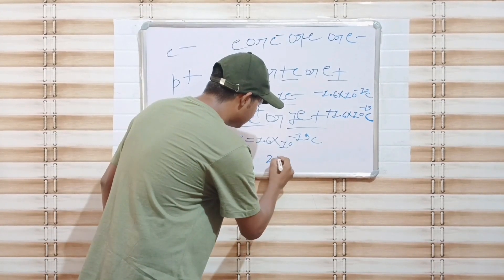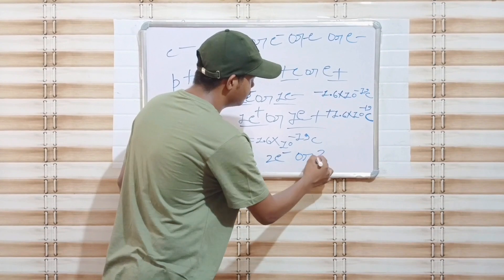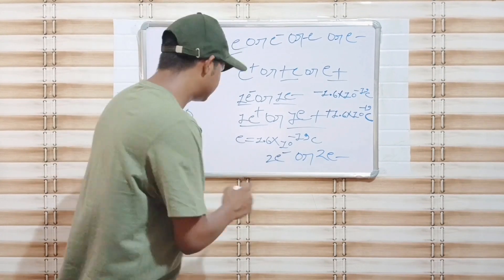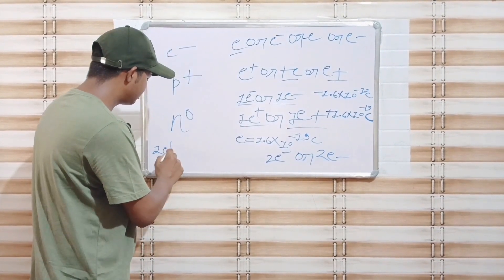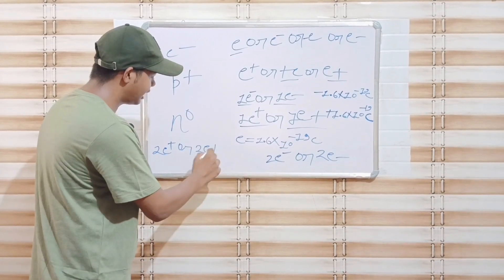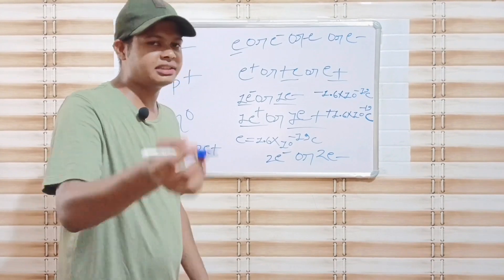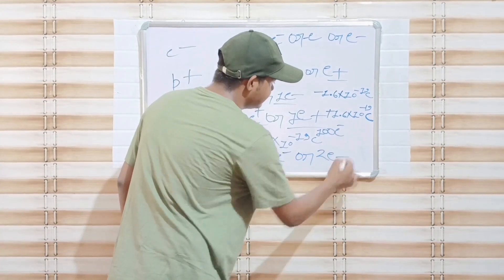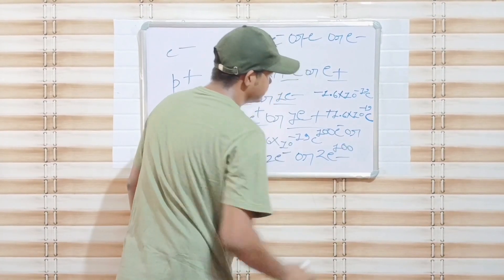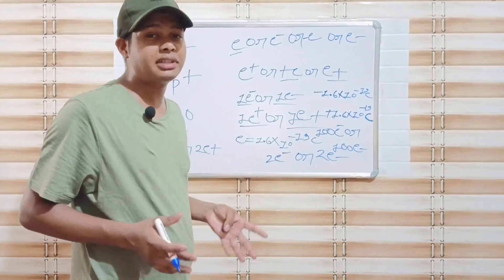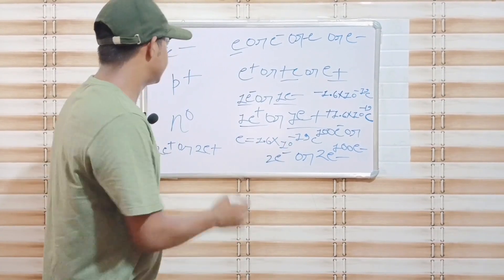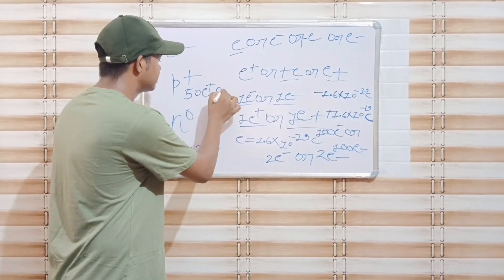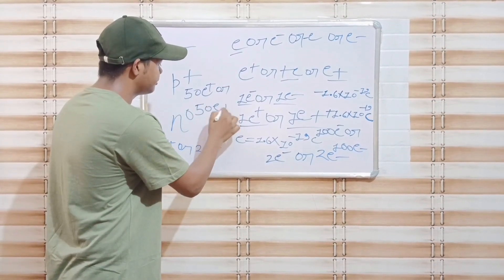If any object gains two electrons, then its charge will be 2 e negative. If any object has extra 50 protons, then its charge will be 50 e positive. Agar kisi object mein 50 protons extra hain to uska charge 50 e positive mein hoga.